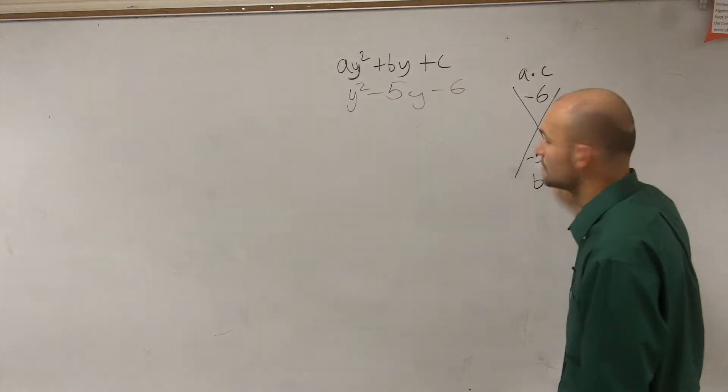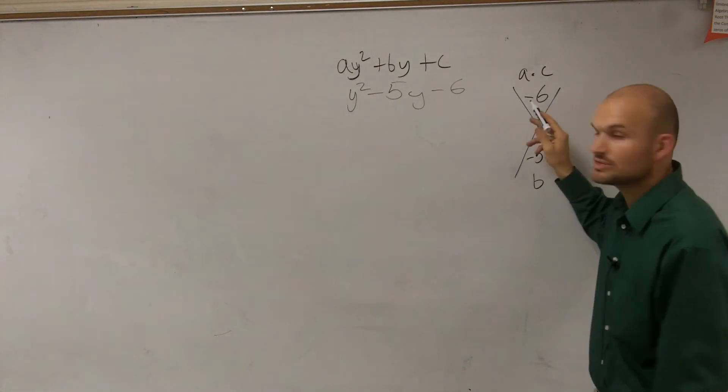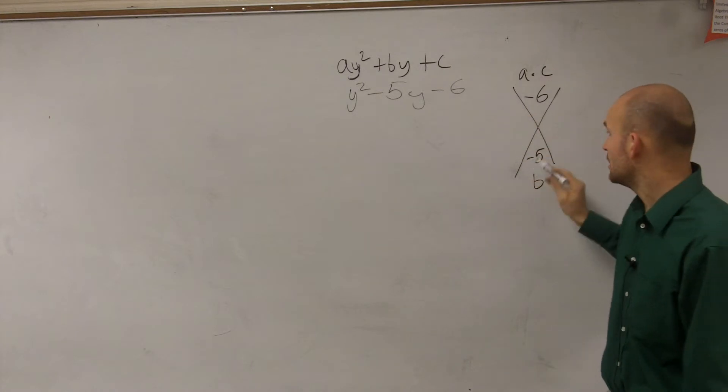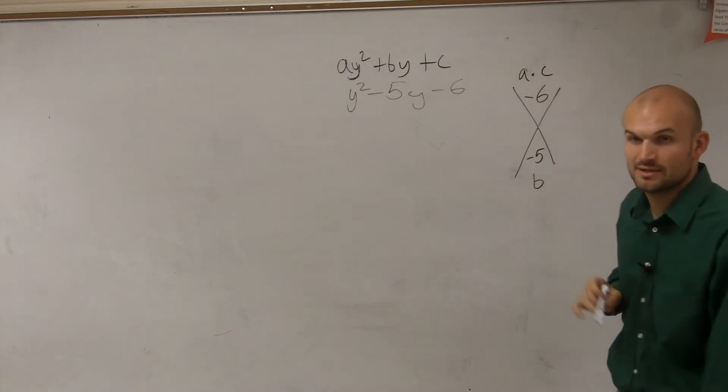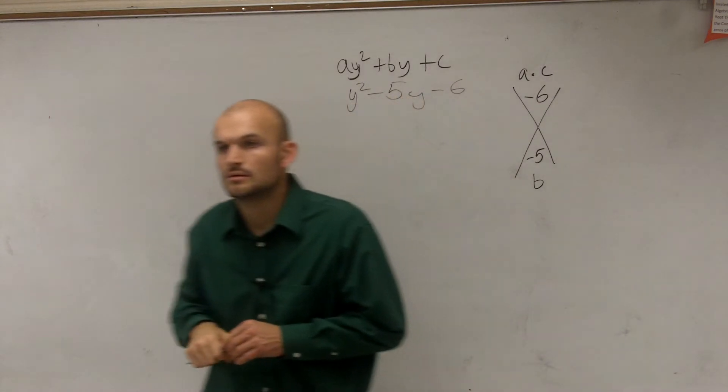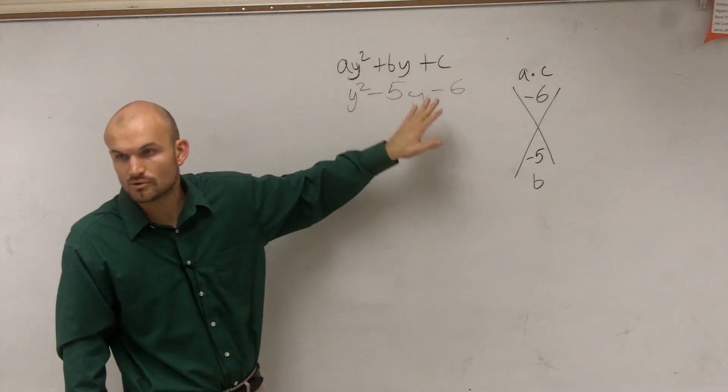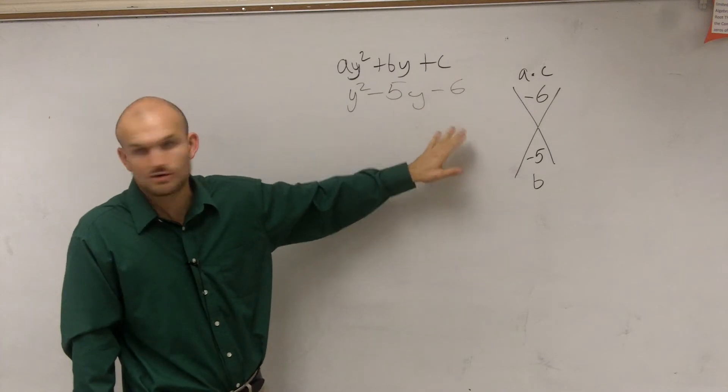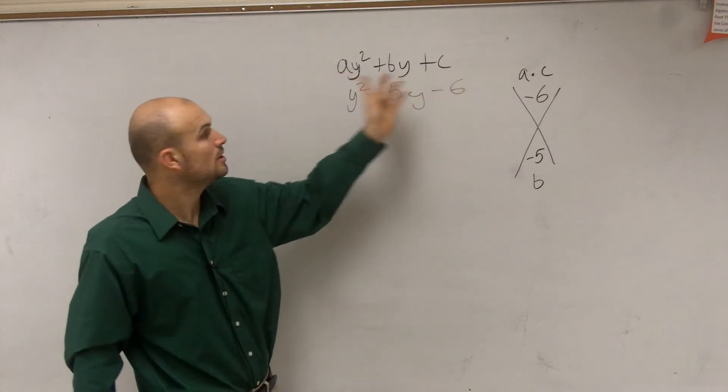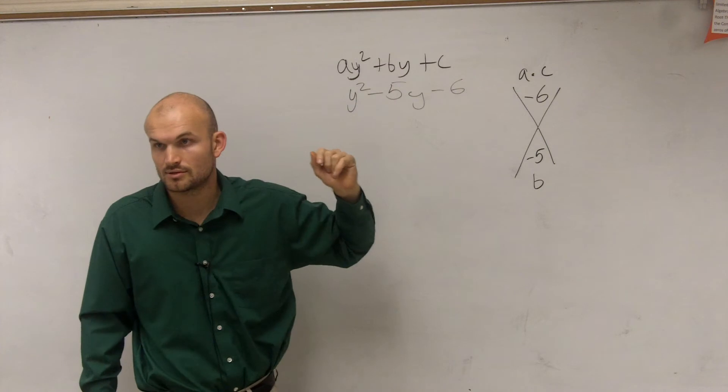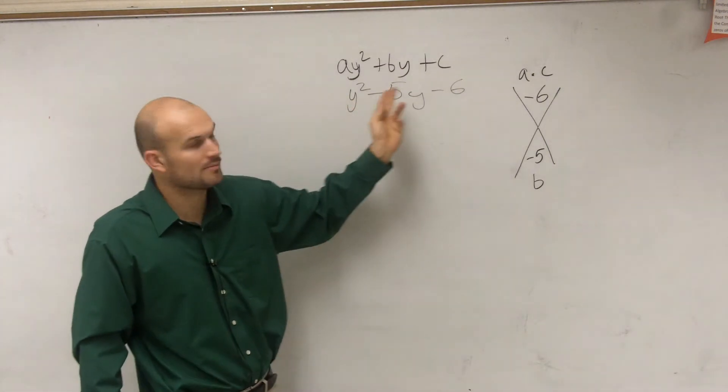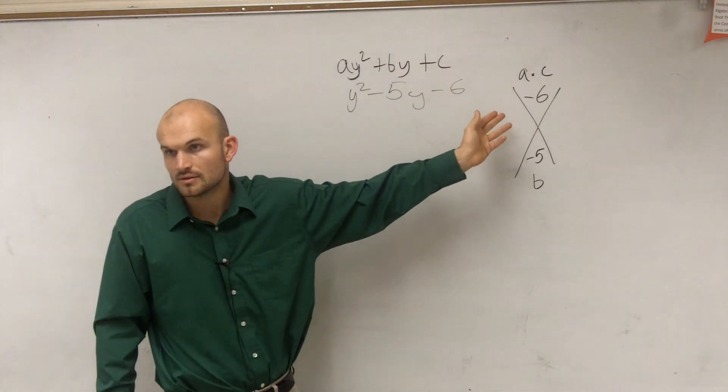And then negative 5 goes right here. Because remember, it's the two numbers that multiply to give you a times c up top, and then b on the bottom. All quadratics can be written in this form. This is what we call a quadratic. The definition of quadratic is it can be written in this form, where a, b, and c are real numbers. And that's what we have. We have real numbers for a, b, and c up there.